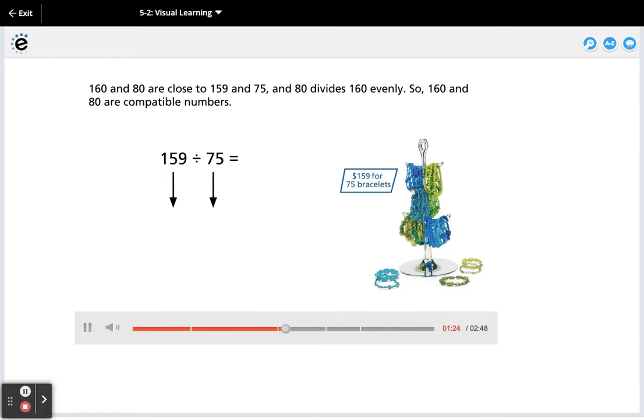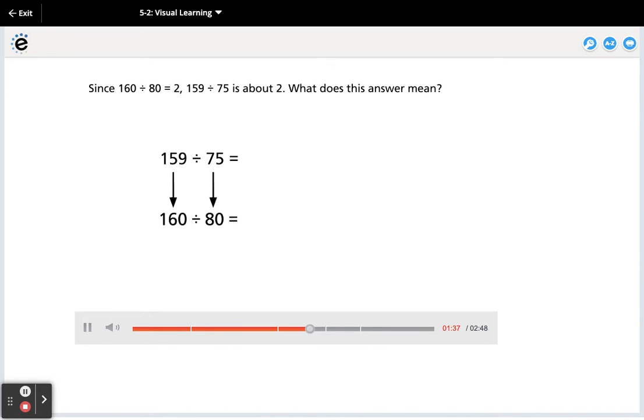160 and 80 are close to 159 and 75, and 80 divides 160 evenly. So 160 and 80 are compatible numbers. Since 160 divided by 80 equals 2, 159 divided by 75 is about 2. What does this answer mean?